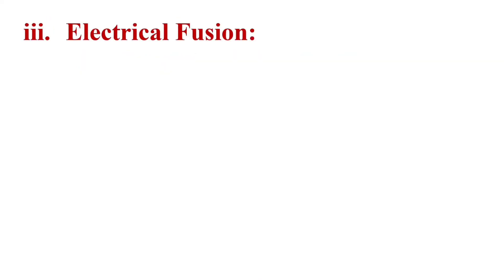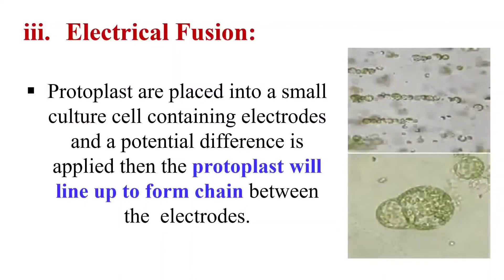The next method is electrical fusion. In this method, we simply make use of electricity or electric current — it is a very rapid and simple method. The protoplasts are placed in a small culture cell containing electrodes, across which a potential difference is applied. As the current passes through these electrodes, the protoplasts line up with each other to form a chain, and due to this electric current, fusion between the protoplasts takes place. This method is known as electrical fusion of protoplasts.